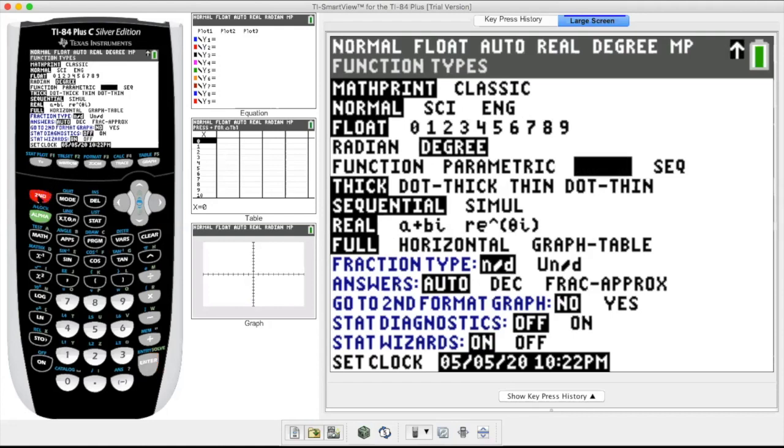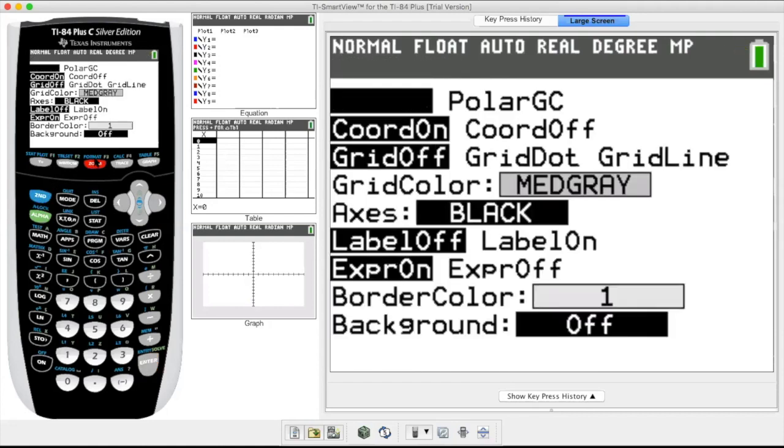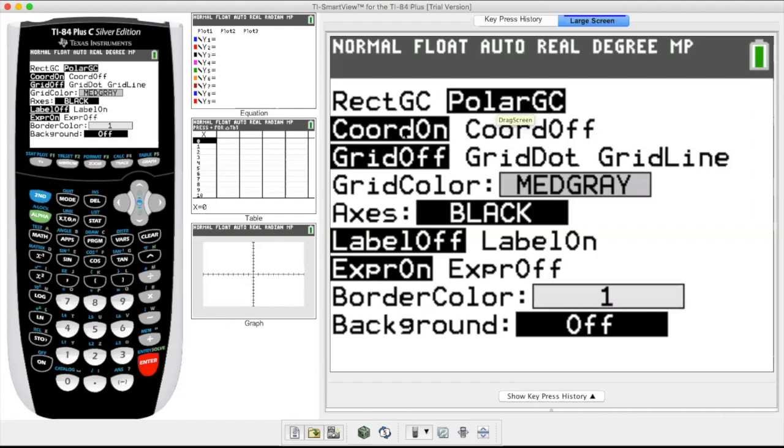Next, you want to go into format. Format is above zoom. So you hit second zoom to get to format. That was second zoom to get to format. I'm in rectangular right now, graphing calculator mode. I want to be in polar graphing calculator. So click the cursor over and it's blinking on polar. Hit enter.